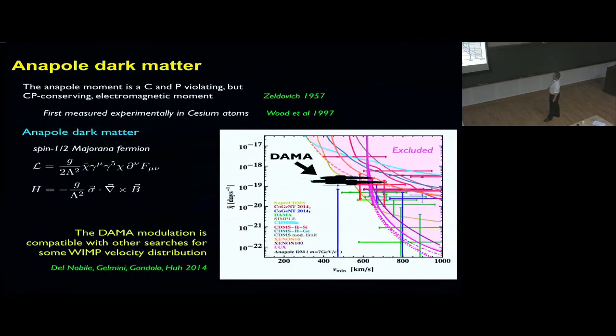Another model I want to point out is the anapole dark matter. The anapole moment is a CP-violating electromagnetic moment. The CP-conserving case was pointed out theoretically by Zel'dovich in 1957 and has been observed experimentally in cesium atoms in 1997. This is real physics. We can make some creative physics and say that dark matter has an anapole moment and no other electromagnetic moment. We can implement it with a spin-1/2 Majorana fermion. What it means, basically, is that there is a coupling between the curl of the magnetic field and the spin of the particle. The curl of the magnetic field is electric current, if you use Maxwell's equation. It's a coupling between the electromagnetic current and the spin. What makes this model interesting is that it can make the DAMA modulation compatible with other searches for WIMP dark matter.